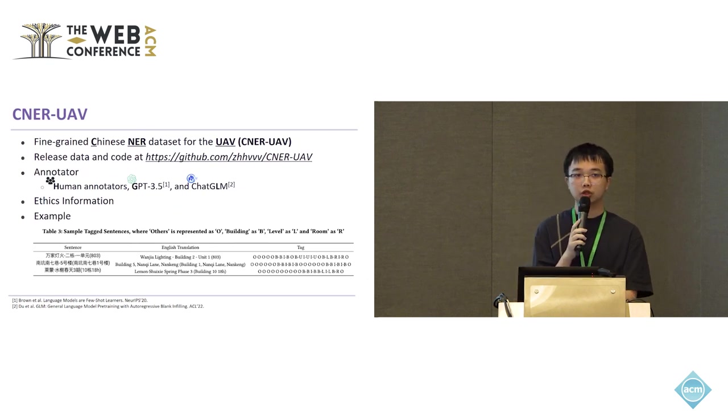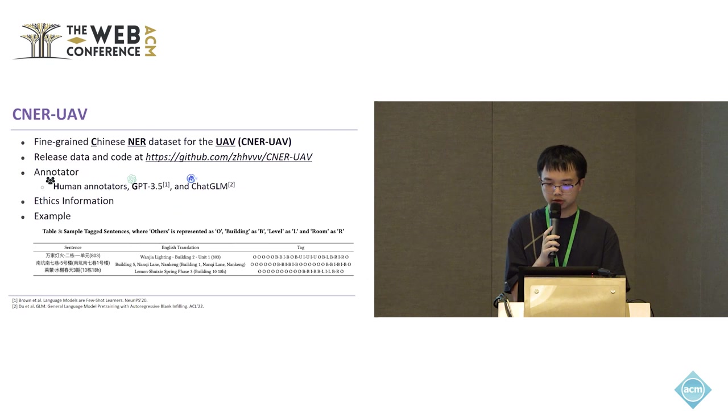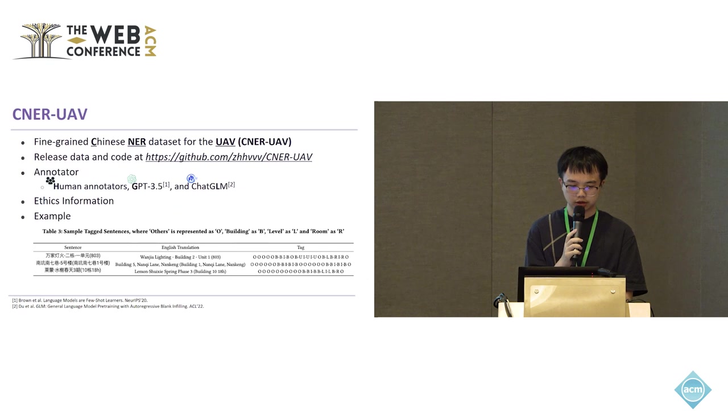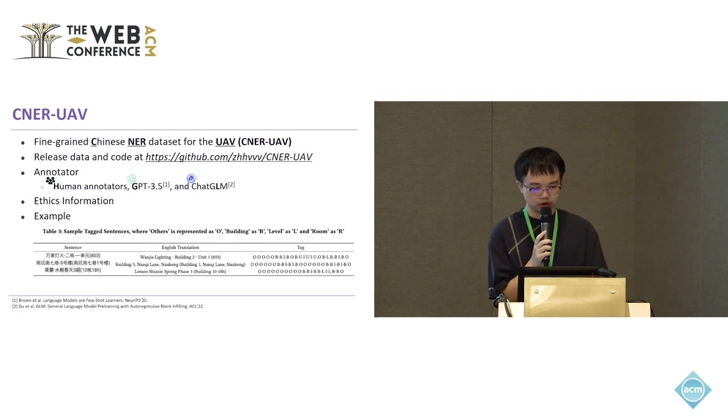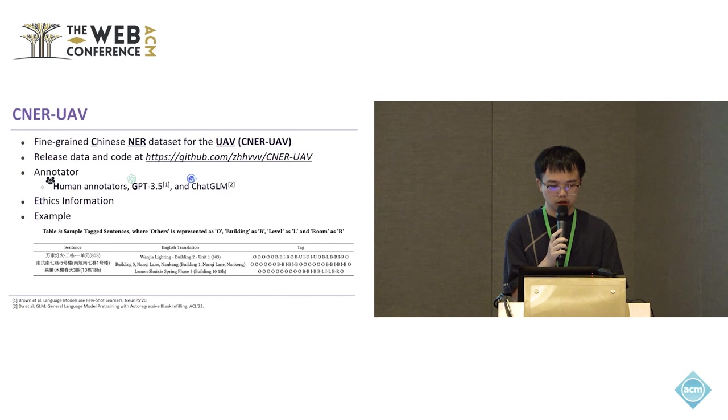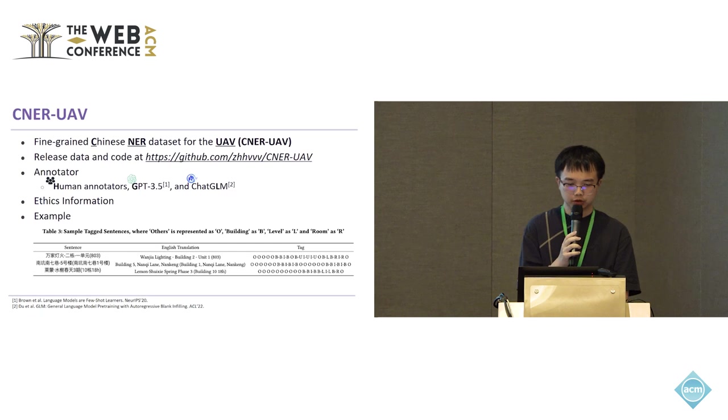We used three annotators, including human annotators, GPT-3.5, and the ChatGLM model. This dataset was created in the first half of 2023. The task of data annotation was outsourced to an external company. The data collection process was approved by Meituan's ethics review board, ensuring the process adhered to ethical guidelines. Meituan is responsible for data desensitization and deletion of user-sensitive information, ensuring that the privacy and confidentiality of users are well protected. Here is an example of our dataset.